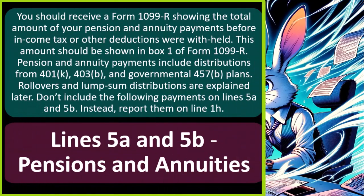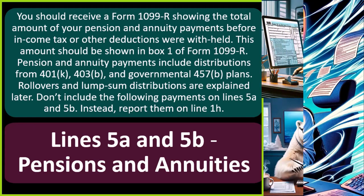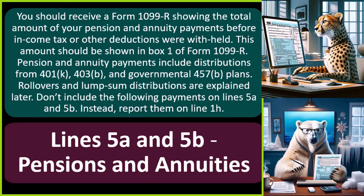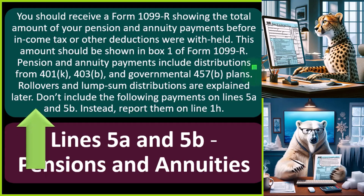You should receive a Form 1099-R showing the total amount of your pensions and annuity payments before income tax or other deductions were withheld. These amounts should be shown in box one of Form 1099-R. Pension and annuity payments include distributions from 401k, 403b, and government 457 plans.